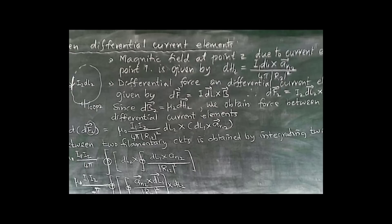This is a very important question asked in the exam many times. So, we have two differential current elements: i1 dl1 and i2 dl2. The path separating the two current elements is called r12. This is represented as loop 1 and loop 2. The two differential current elements are moving in opposite directions — i1 dl1 moving upwards and i2 dl2 moving downwards.